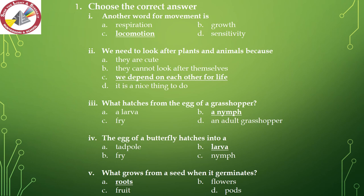Number 4 — the egg of a butterfly hatches into: a tadpole, larva, fry, or nymph. The correct answer is option B — larva. Number 5 — what grows from a seed when it germinates? Options are roots, flowers, fruit, or pods. The correct answer is roots.